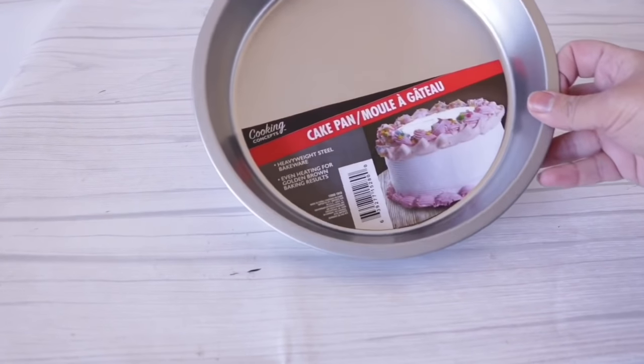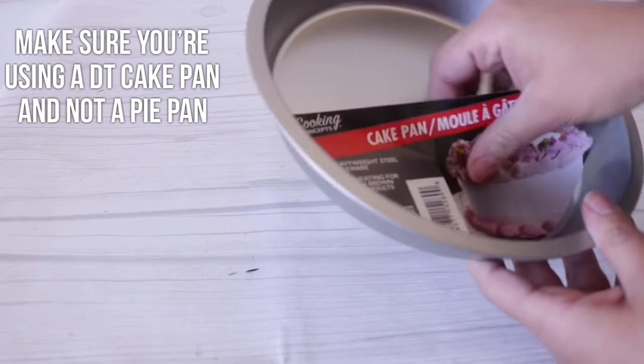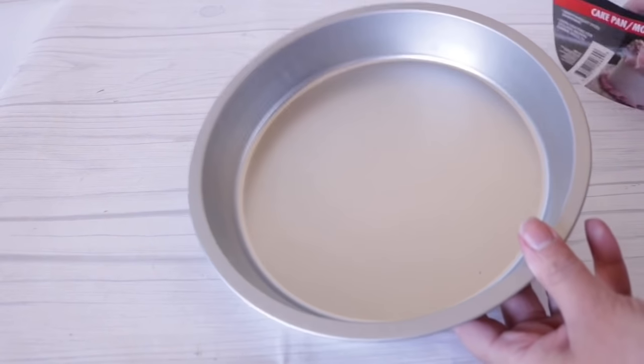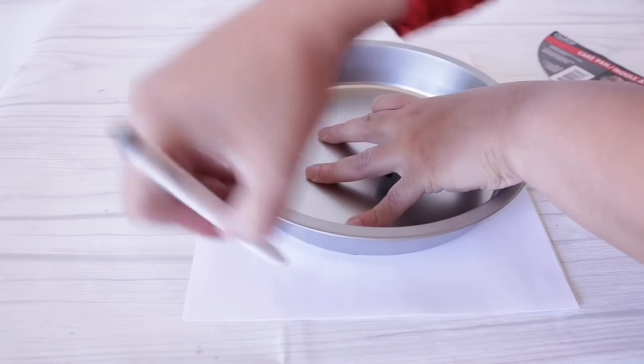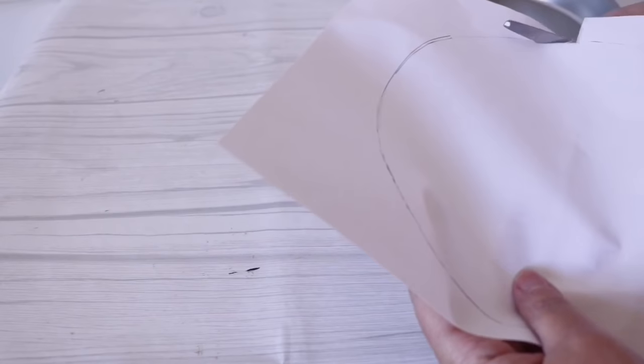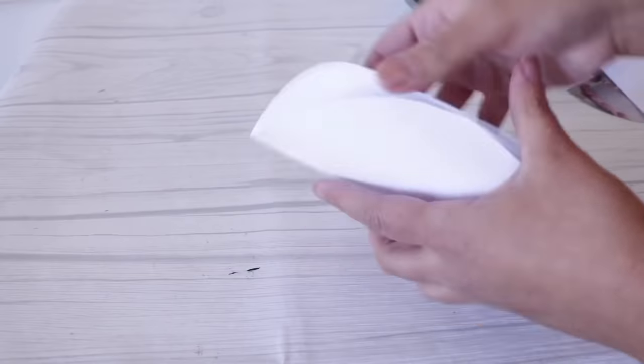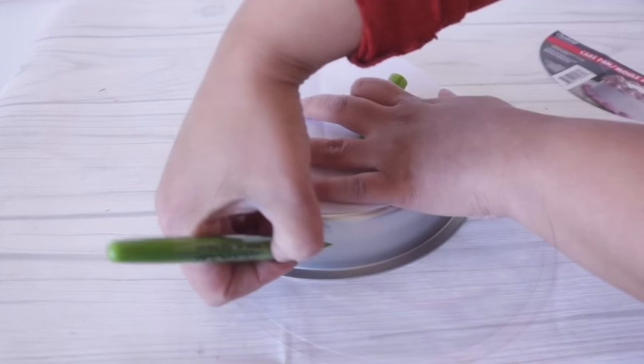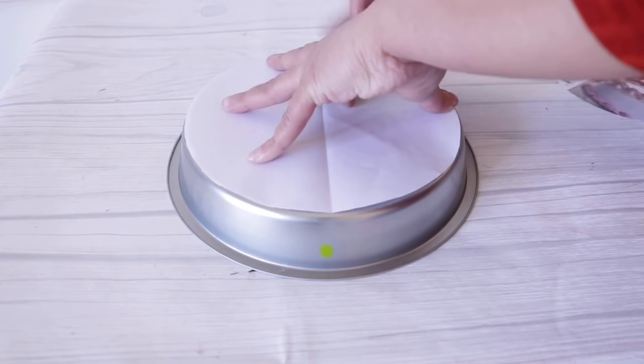For the top, I'm going to use this Dollar Tree cake pan. Make sure that you're getting the cake pan and not the pie pan since that one is a little on the tapered side. To find the center of this, I put this on a piece of paper, traced it out, cut the circle out, and when I cut it out, I folded it in half so that I can find the center point of the top and bottom of the pan where I'm going to make my markings. This is to add my hooks.